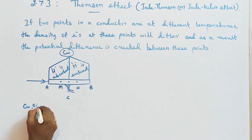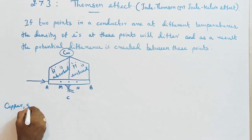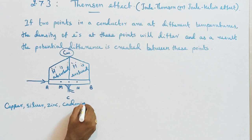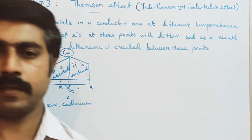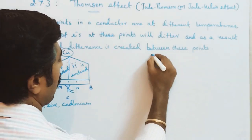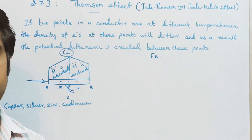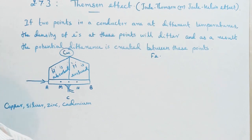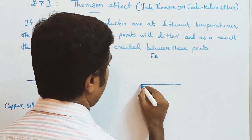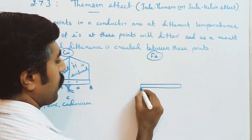The metals showing positive Thomson effect are copper, silver, zinc, and cadmium. Now, in place of the copper metal bar, let us choose an iron metal bar.